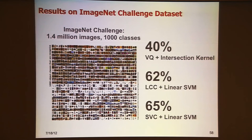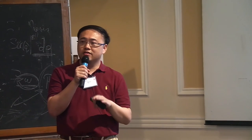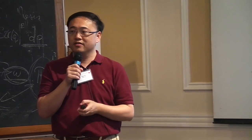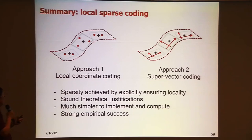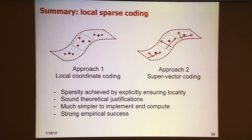By the way, the record has since been broken by deep learning models — deep neural networks from Hinton's group at Toronto and Google, who developed multi-layer deep neural networks with three or more layers and trained the whole system, achieving better results. It's very exciting to see the advance of the field. These two methods are a simple way to achieve sparse coding — without solving complicated L1 norm optimization — while still achieving sparsity by explicitly ensuring locality. Compared to classical sparse coding, they have sound theoretical justifications, are much simpler to implement, and show strong empirical success.